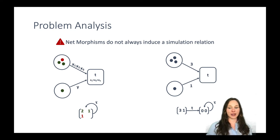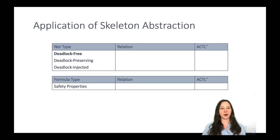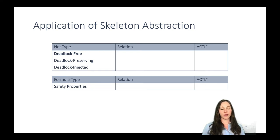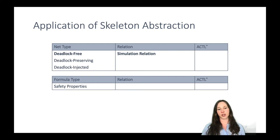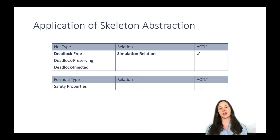This leads us to the question: is skeleton abstraction applicable, and for which type of net or formula? For deadlock-free nets, the problem with deadlocks cannot occur, so the relation between the reachability graphs of the colored net and the skeleton net is a simulation relation. Therefore we can transfer ACTL* results from the skeleton to the colored Petri Net. This case is straightforward.